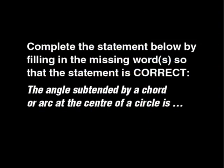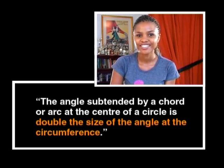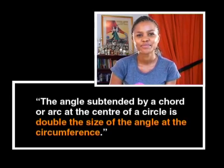John is now going to take us through examination-style questions using the last two theorems. The first question requires a completion of the statement — this is often a hint as to which theorem will be used in subsequent questions. Complete the statement: the angle subtended by a chord or arc at the center of a circle is double the size of the angle at the circumference. Since that was the first part of the question, it is likely you will be using this theorem in the next part.